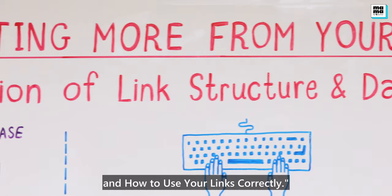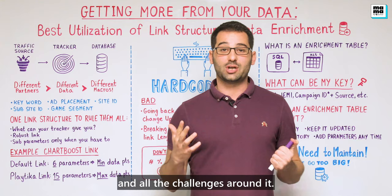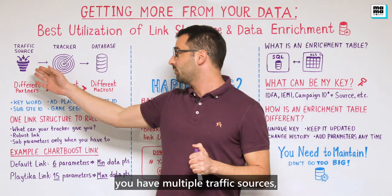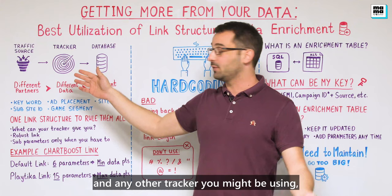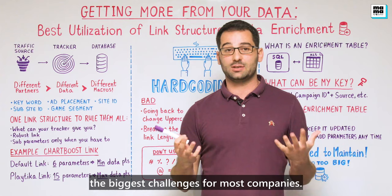When you talk about data, data is the most important thing within our industry today. Everyone is talking about big data and how to do it correctly and all the challenges around it. The main cause of issues is that you have multiple traffic sources, multiple trackers — like AppsFlyer and any other tracker you might be using — and your own database, making the data flow very complex. To do things correctly, you have to do it smart, and I believe that's one of the biggest challenges for most companies.